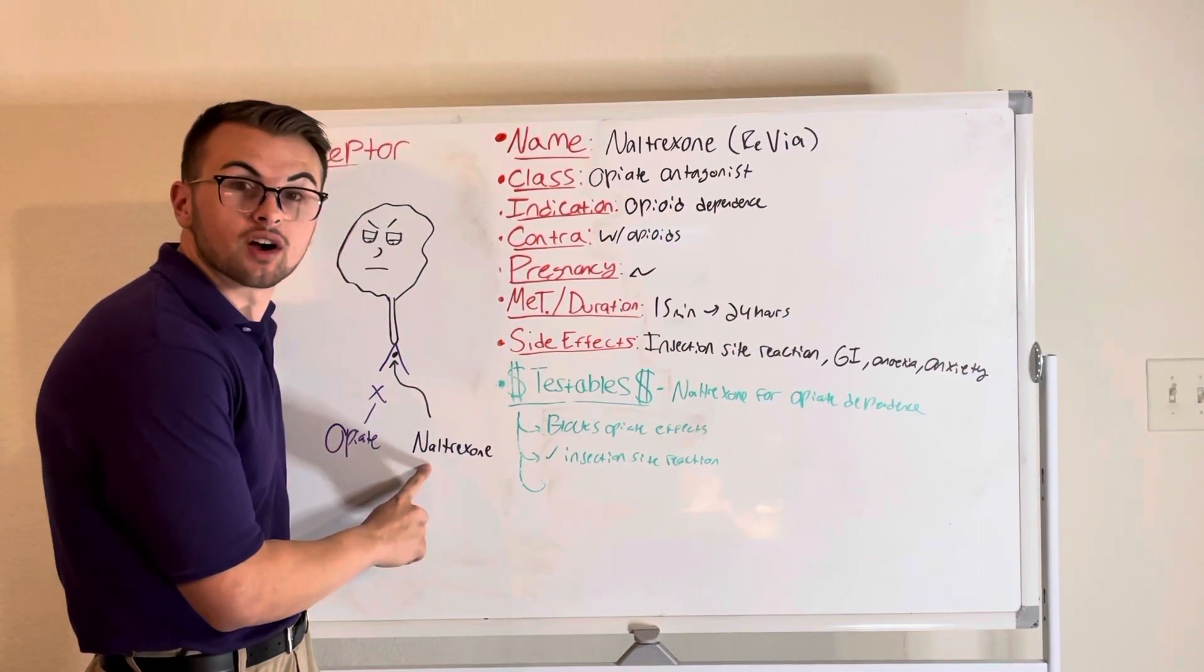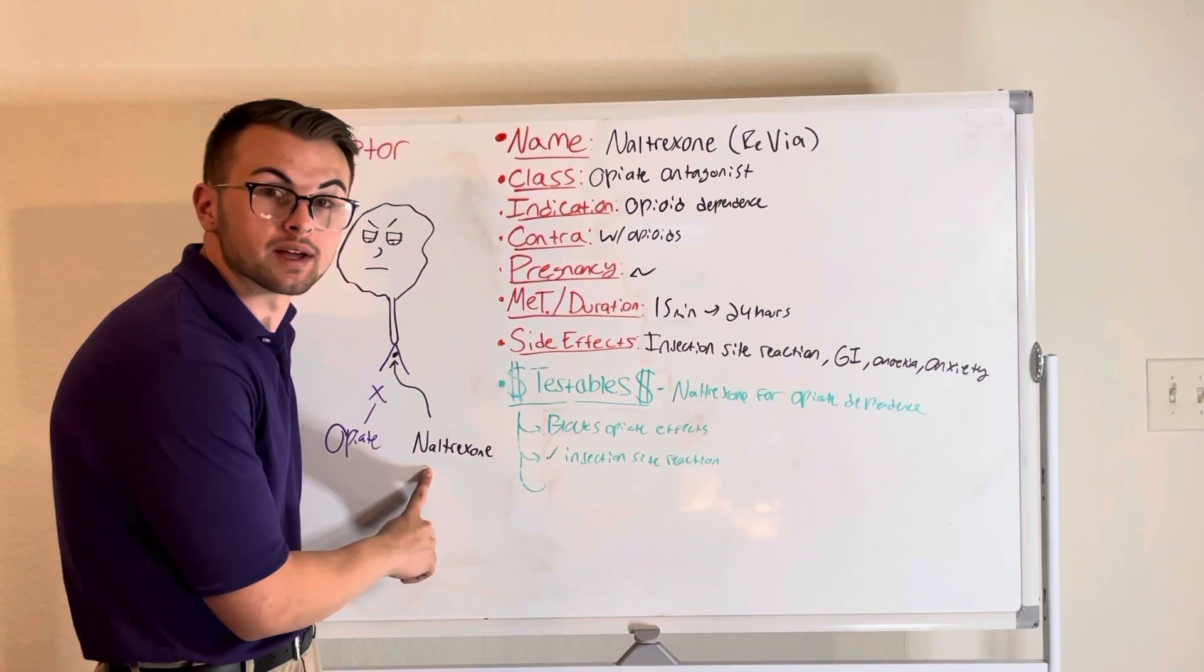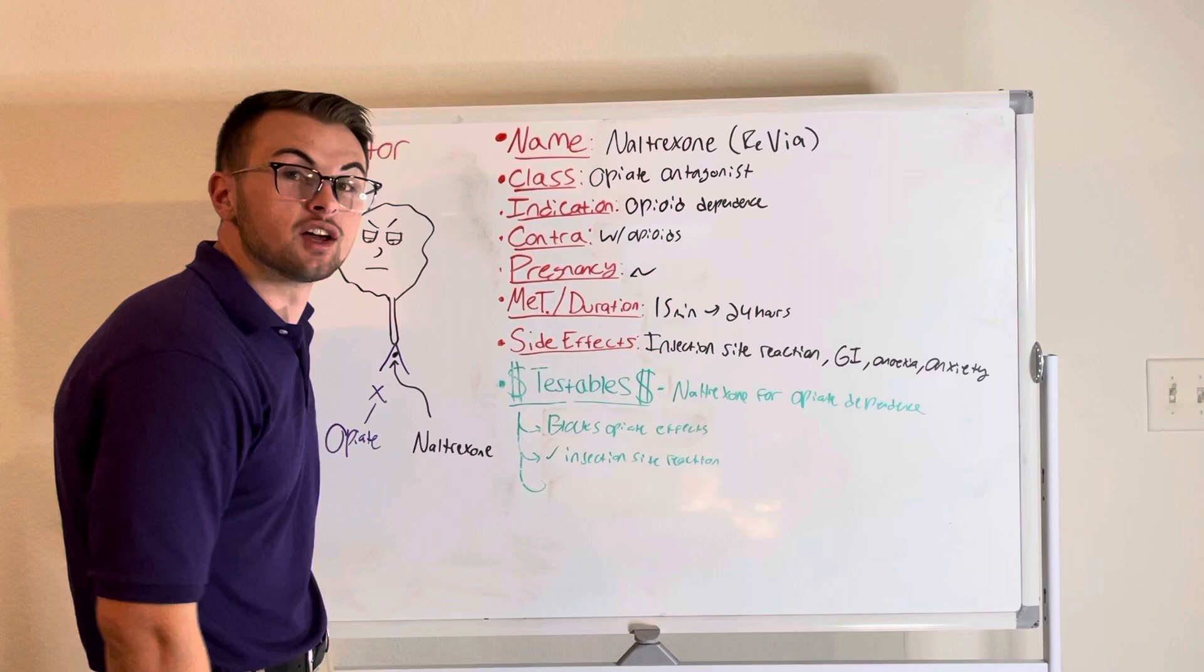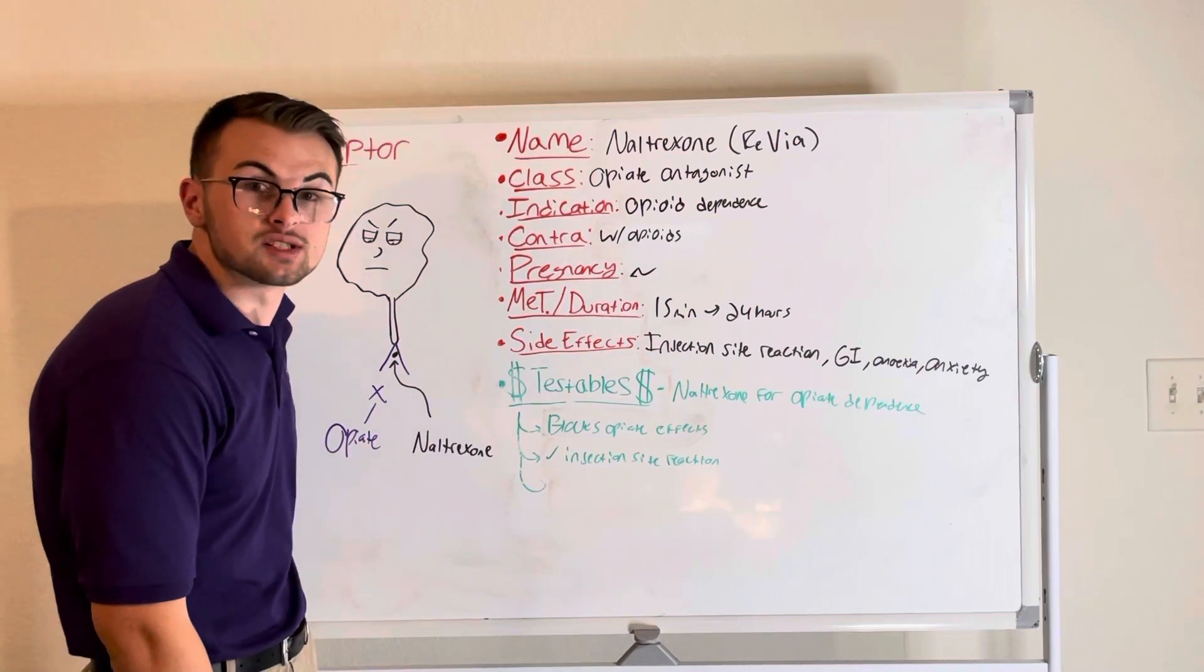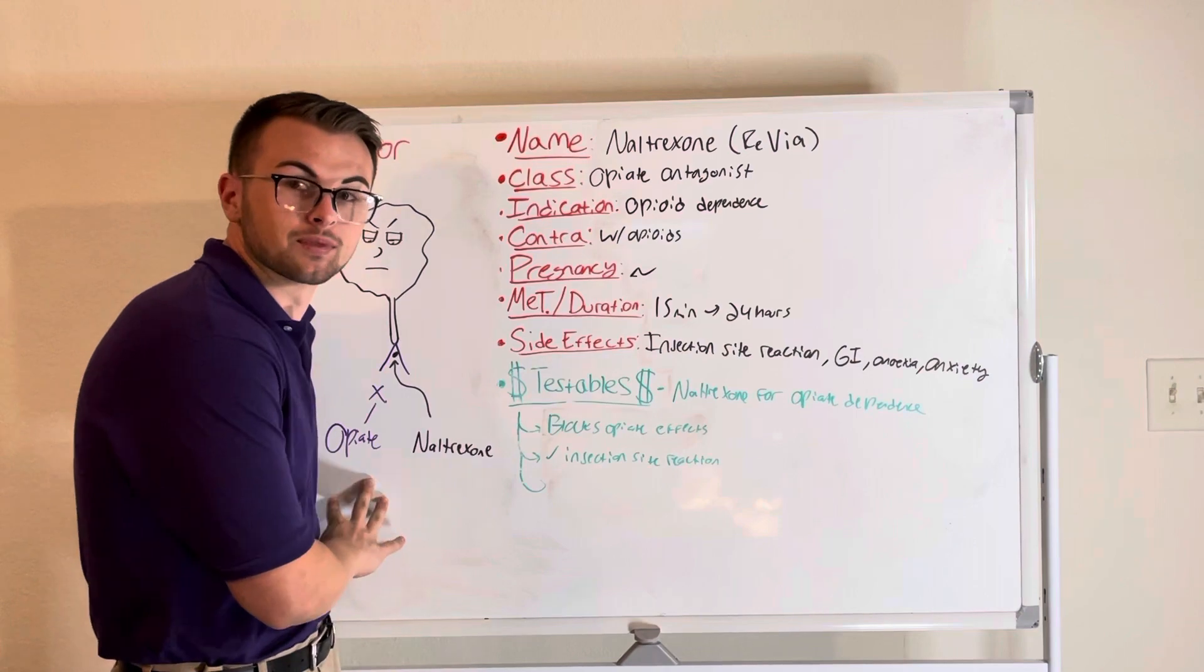Basically, this drug naltrexone or RE-VIA blocks the effects of opiates like sedation, euphoria, and analgesia, and lastly it will block respiratory depression.